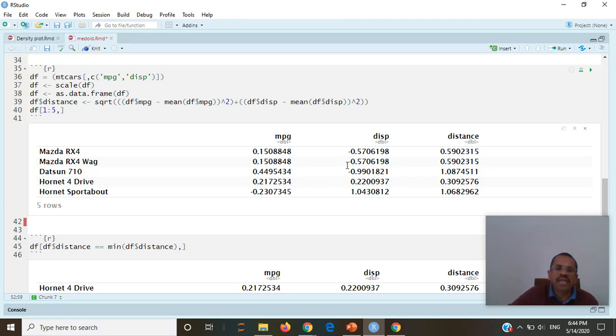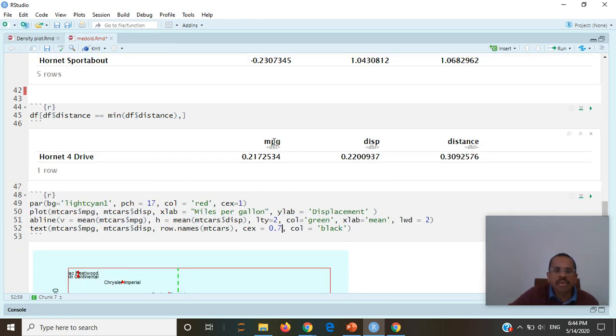These are scaled, so you are seeing all zero values or values very near to zero, even negative values, because it is scaled with a mean of zero and standard deviation of one. I calculated all the Euclidean distances between centroid and all values, and I took the minimum distance. At that minimum distance, this Hornet 4 Drive vehicle exists in the dataset.